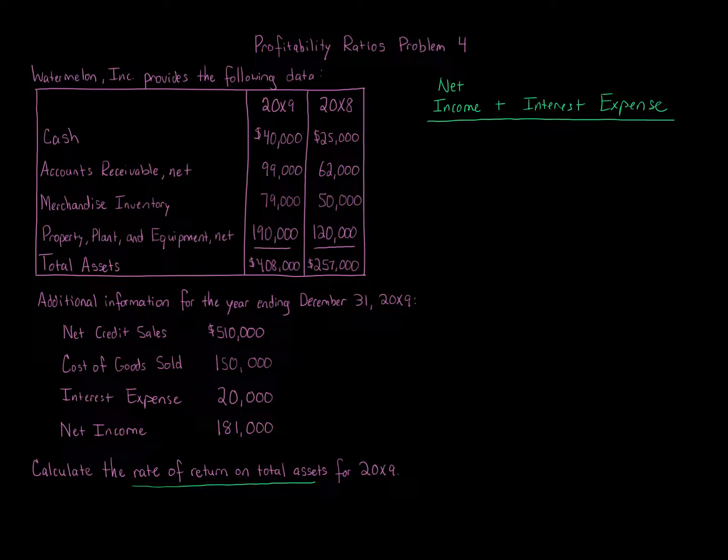So again, profitability analysis, most of the calculations we're taking into account things from the balance sheet and things from the income statement. So the average total assets, and we're focusing on 20X9.